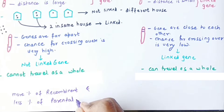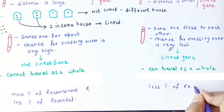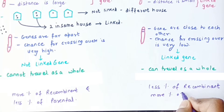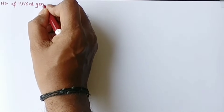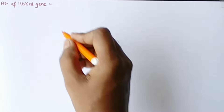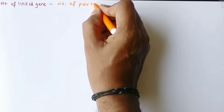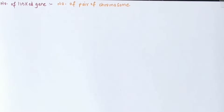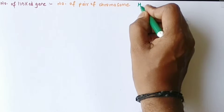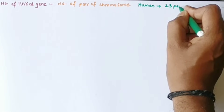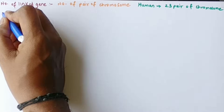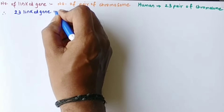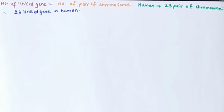In incomplete linkage there is more chance for recombination and a lower percentage of parental type, whereas in completely linked genes the chance for recombination is very less and the parental percentage is very high. The number of linked genes is directly related to the number of haploid chromosomes. In humans we have 46 chromosomes — 23 pairs — so the haploid number is 23, meaning there are 23 linkage groups in humans. These 23 linked genes are always transferred as a whole to the next generation.